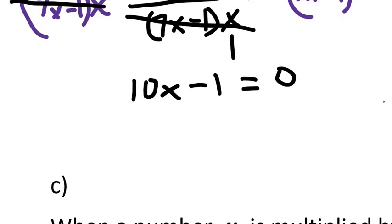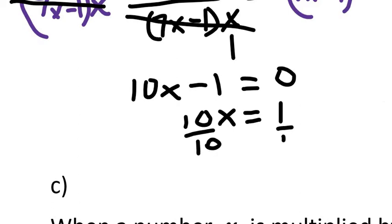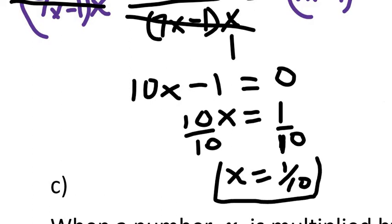Simplifying further, we're going to add 1 to both sides — taking minus 1 over to the right-hand side gives us 10x equals 1. Next we divide both sides by 10, and 10 into 10 goes once, so we have x equals 1 over 10. And that's our solution.